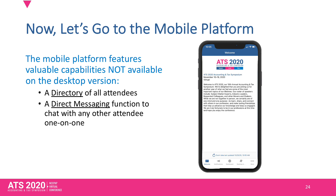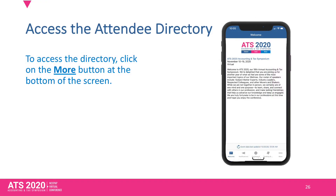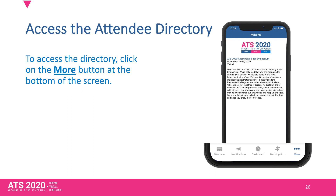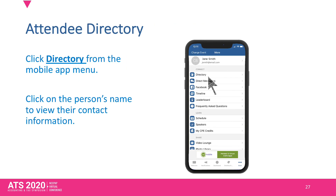On the mobile platform, you can see who else is attending and message them. To see the attendee directory, first click on the dot dot dot or More button at the bottom, then click Directory to view attendees.